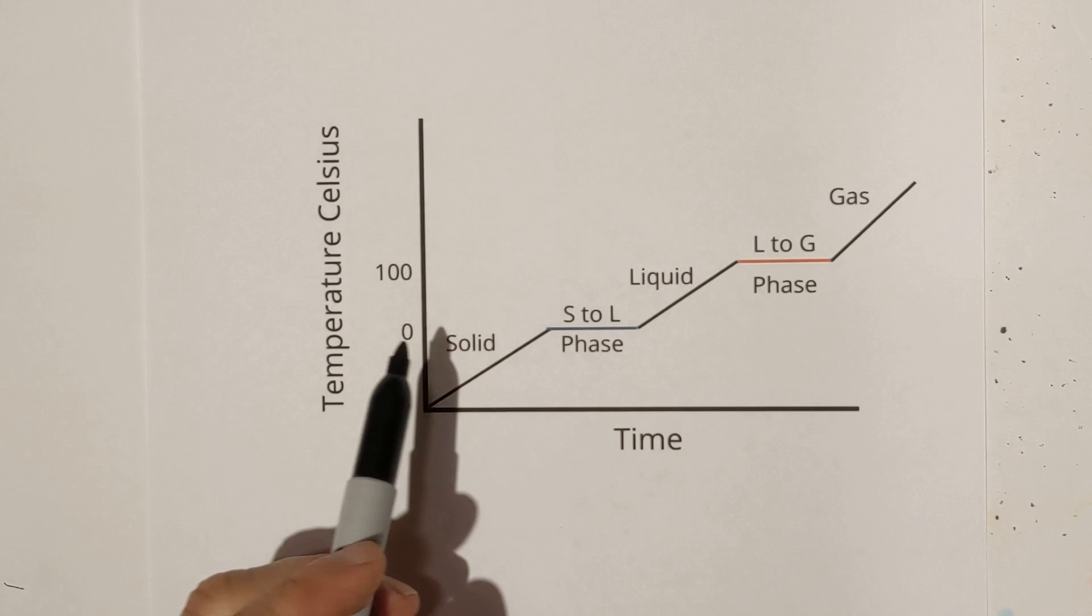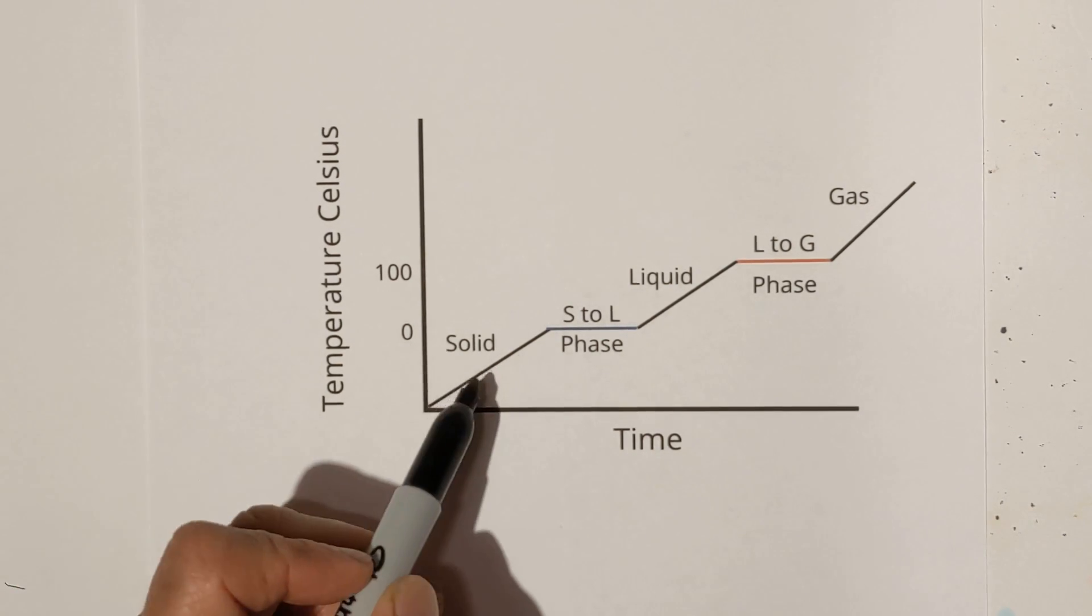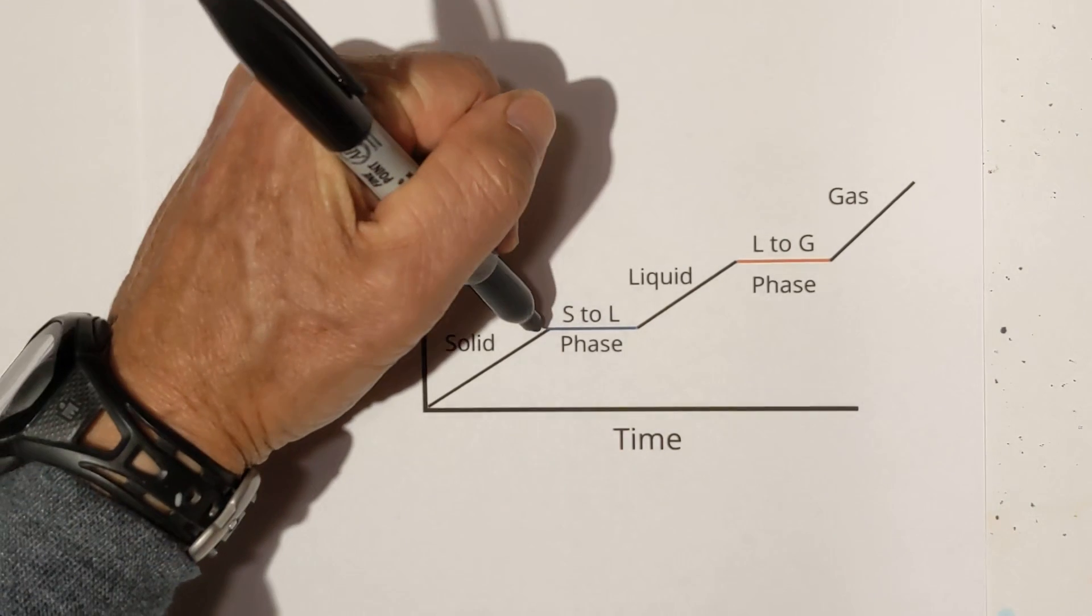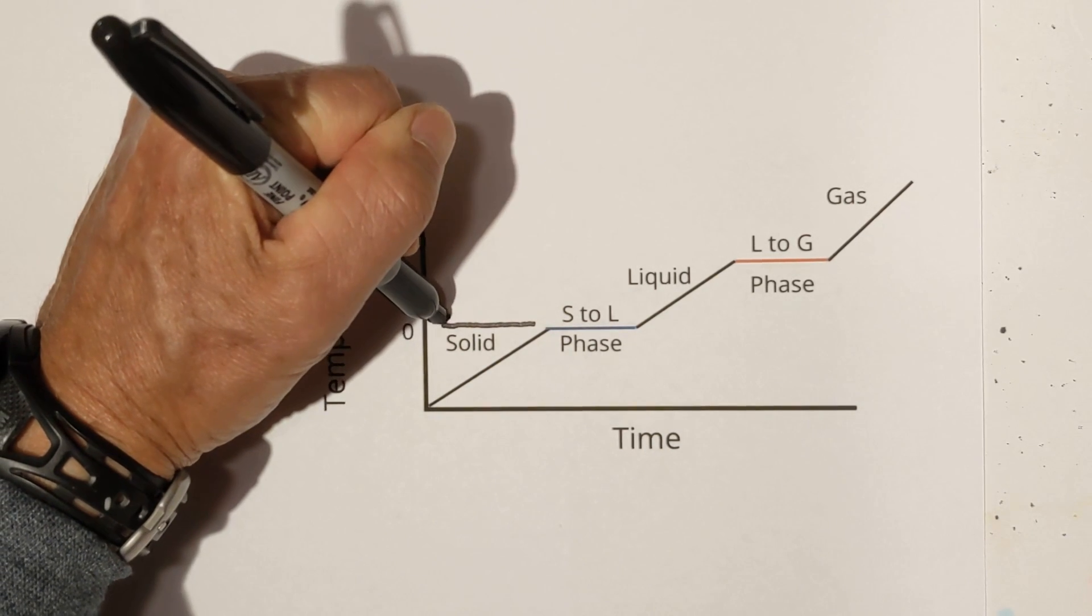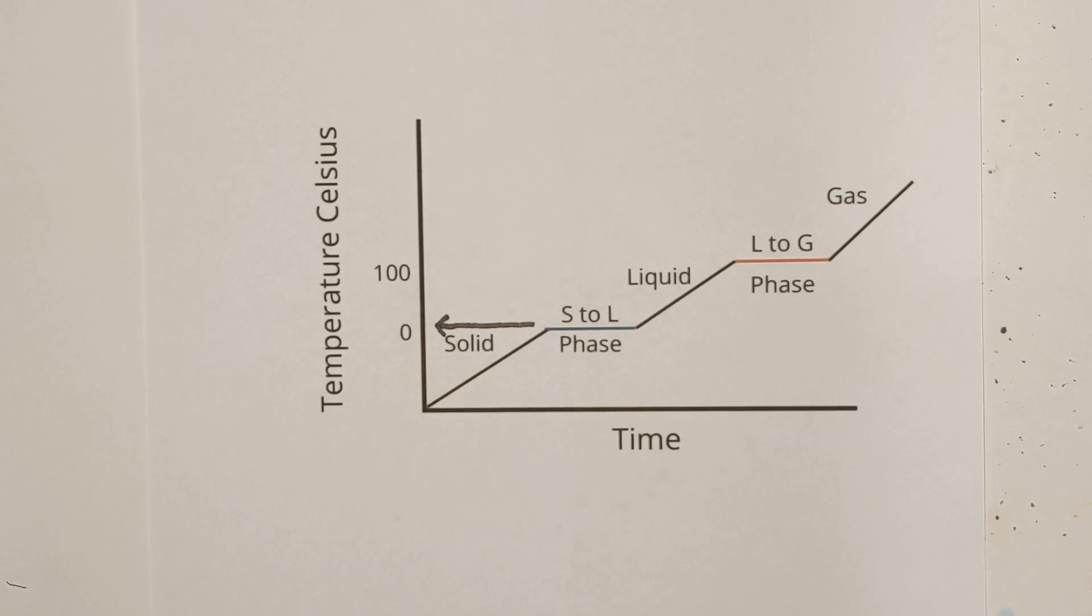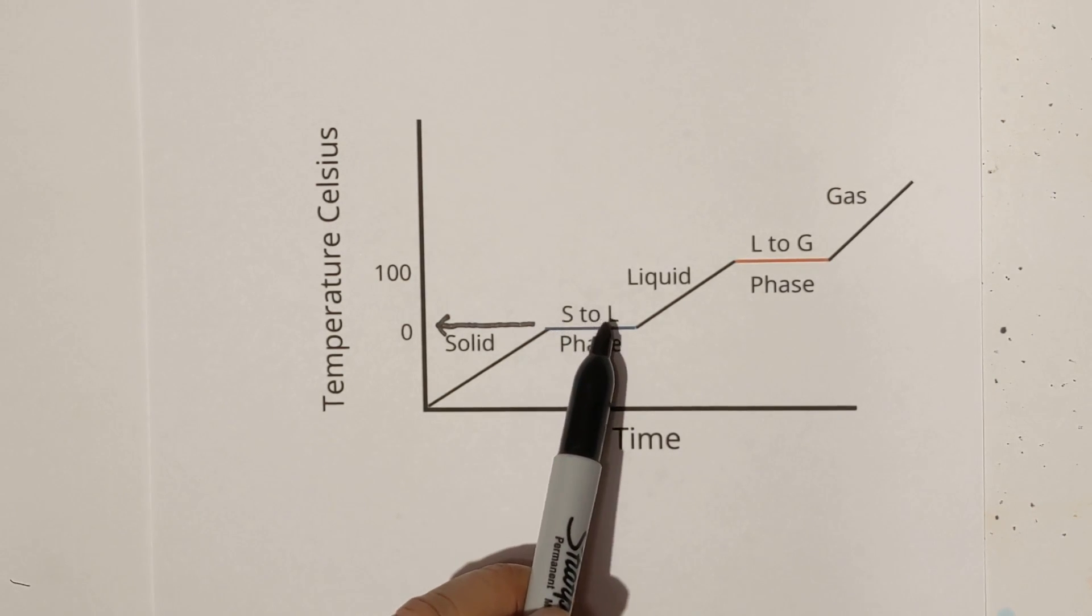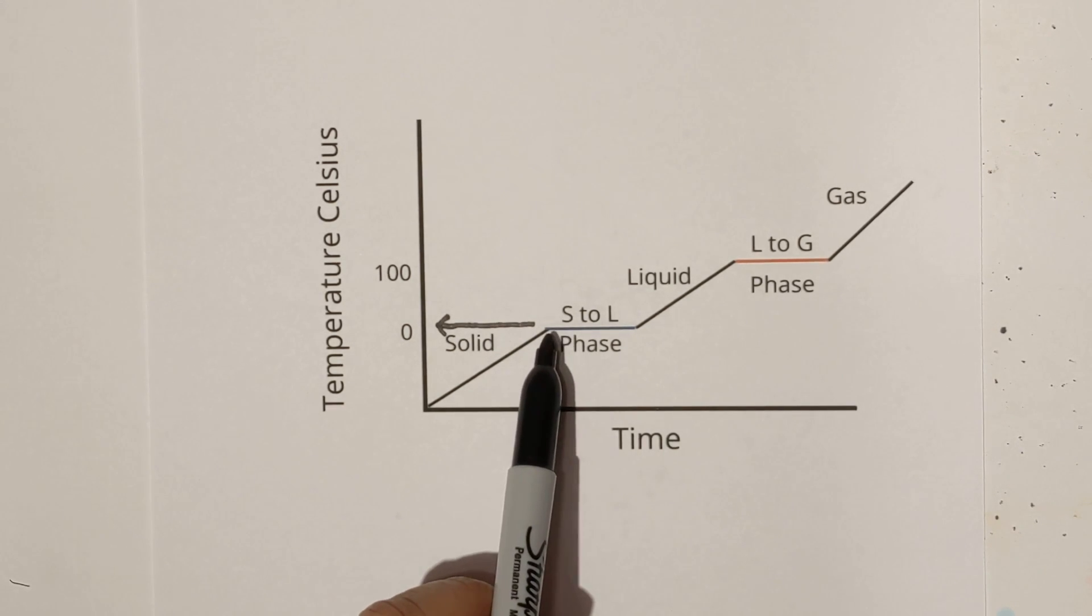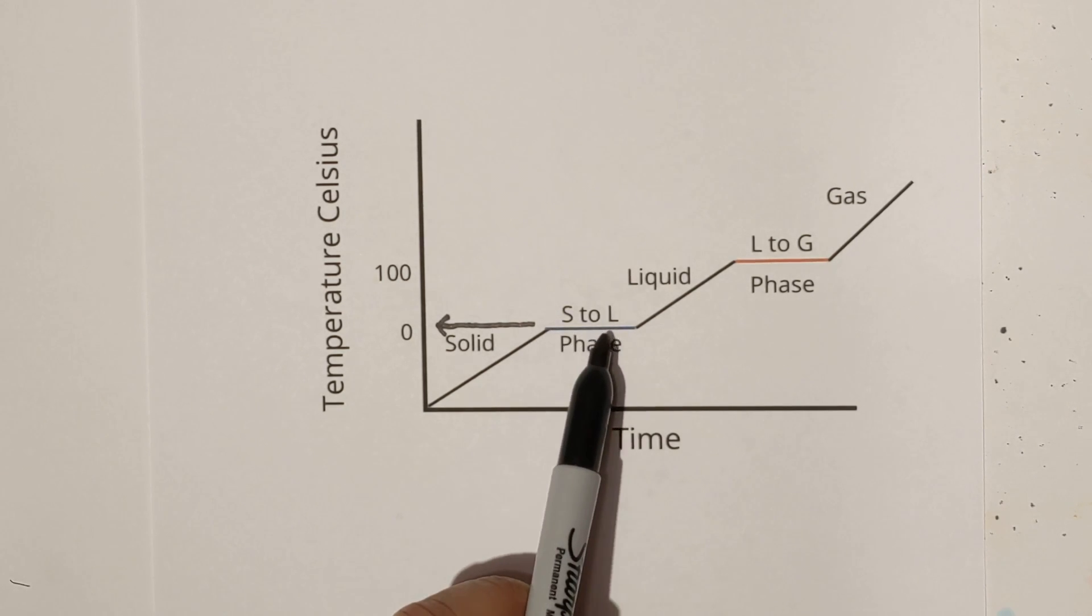We're going to start as a solid and over time the temperature you can see is beginning to rise. It's going to remain a solid until it gets to this temperature and this is actually water, so it's at zero degrees. At this point it's beginning a phase change from a solid to a liquid. In other words it's beginning to melt but it takes a little bit of time. That's why you have the horizontal line where the temperature is remaining constant.